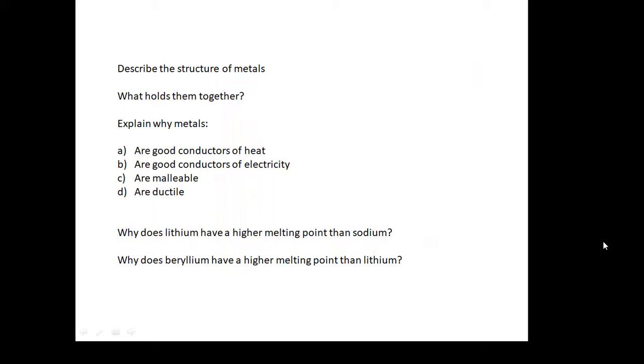Here are some questions for you to have a go at. Describe the structure of metals—be able to sketch and label that diagram at the beginning. Describe what holds them together. Explain why metals are good conductors of heat, good conductors of electricity, malleable, and ductile—the four things we talked about. Why does lithium have a higher melting point than sodium? They're both in Group 1. And then, why does beryllium have a higher melting point than lithium? That's Group 2 compared to Group 1.